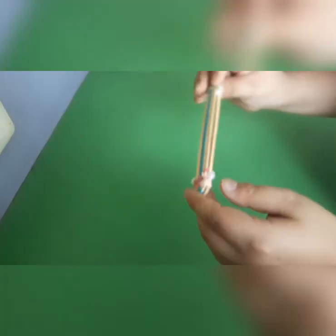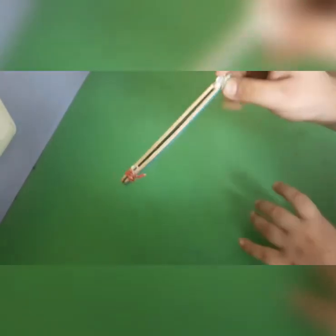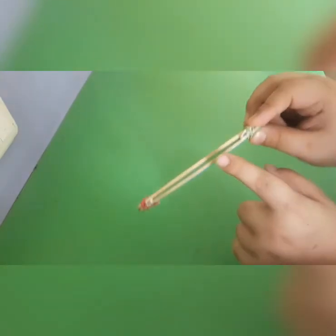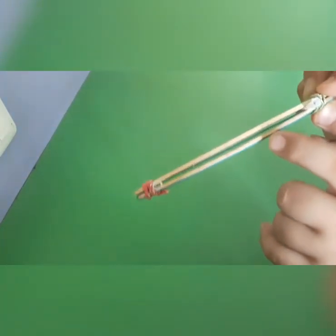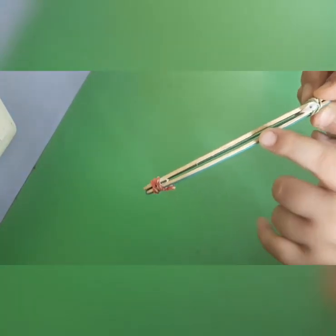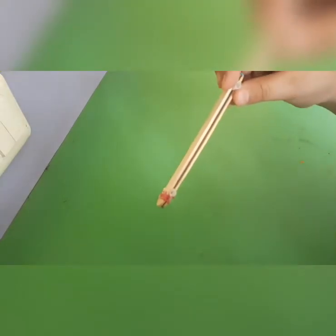Done! Our kazoo is ready. Now what happens when you blow over here, the rubber band inside it vibrates and the sound is created. It sounds like this.